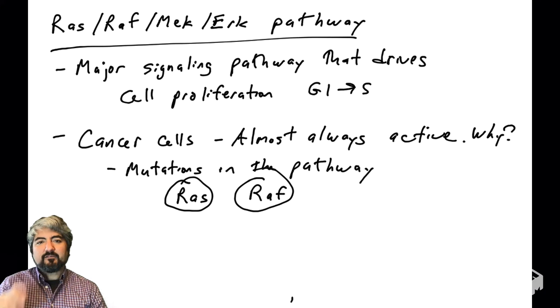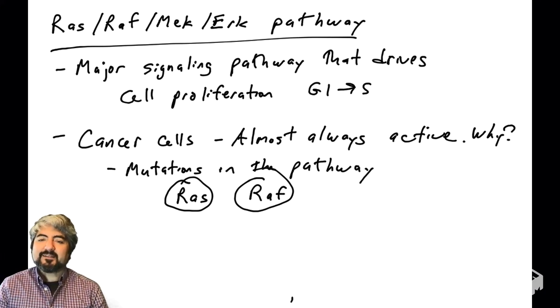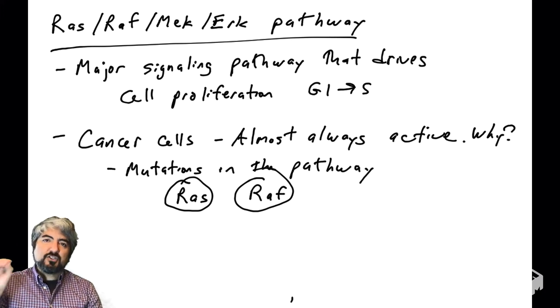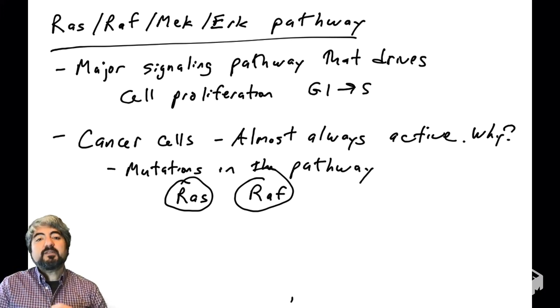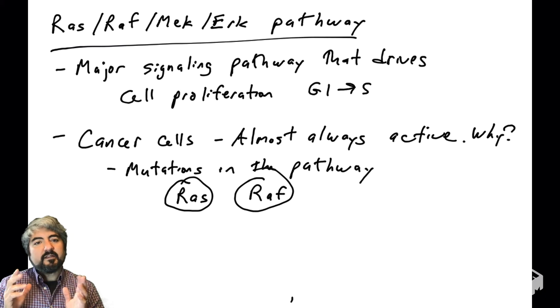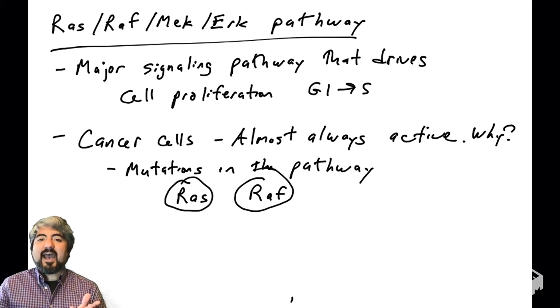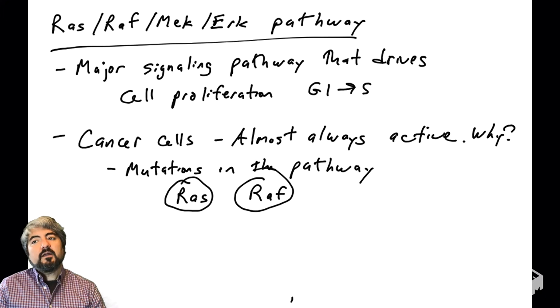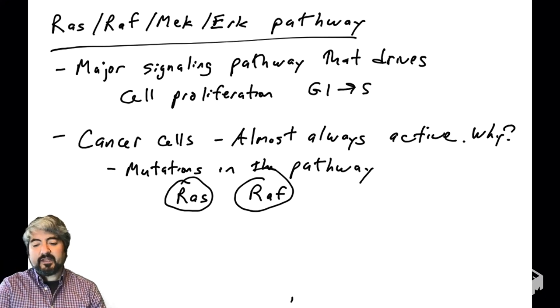Why is this pathway active? So there are two main reasons why this pathway could be active. One are mutations in genes that make the proteins in this pathway. So there's a protein we're going to learn about called RAS and a protein we're going to learn about called RAF. Both of them are commonly mutated in human cancer. So if they're mutated, we'll see how that can trigger a pro-growth state for cells.